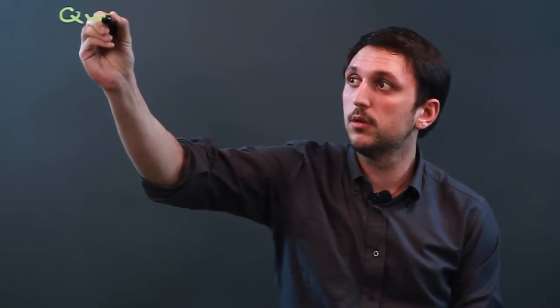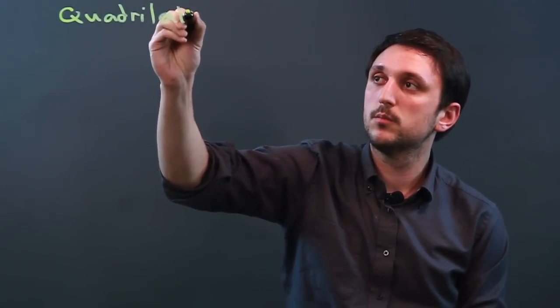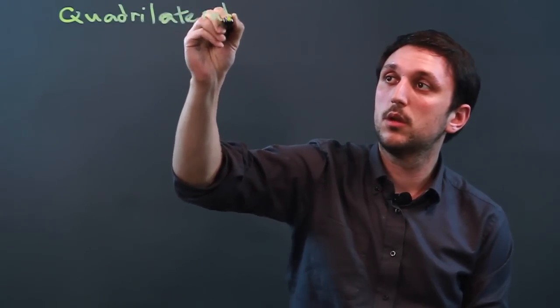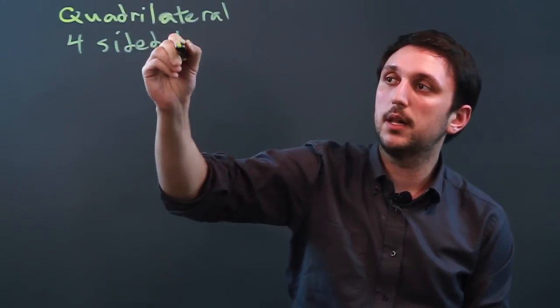So first, what is a quadrilateral? Well, a quadrilateral is a four-sided polygon.